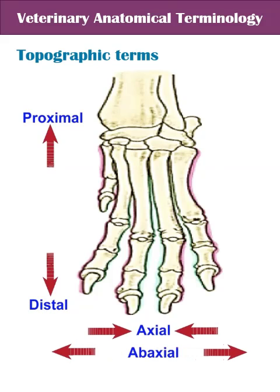In dogs and ruminants, axial means inward in the direction of the middle toe, while ab-axial means outward.